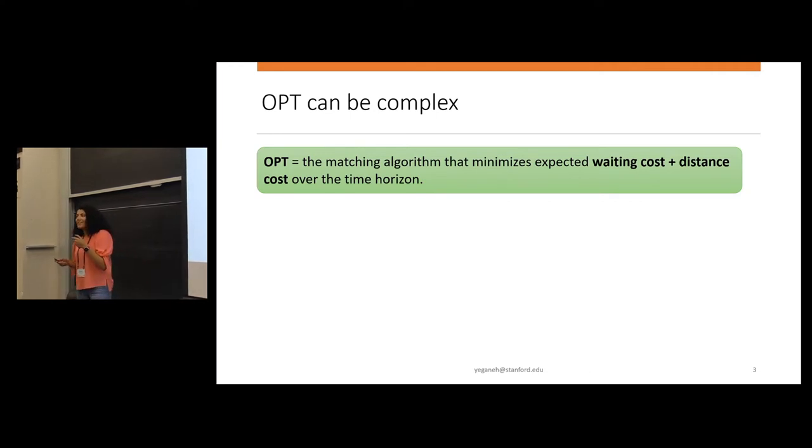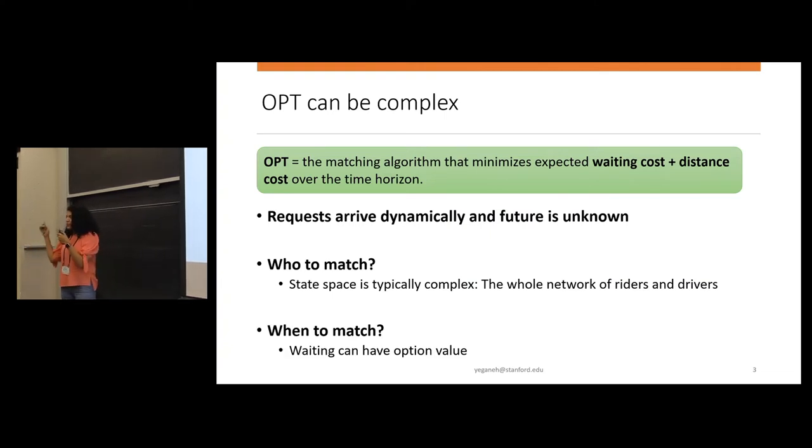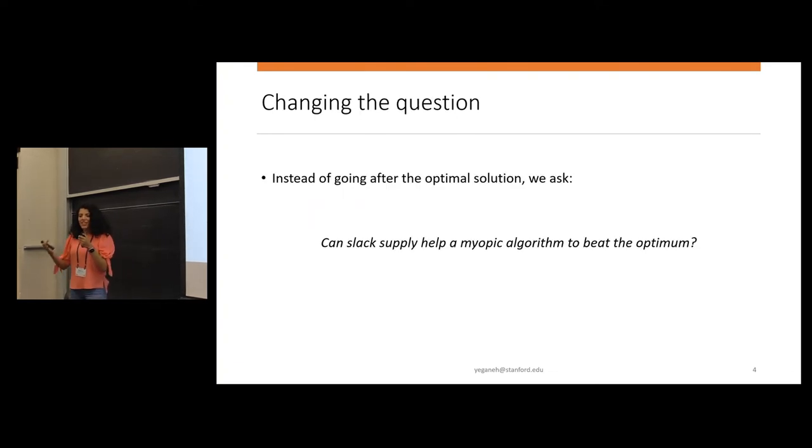So the optimal algorithm can be hard in general because the question of who to match and also when to match. Should I wait and batch a few riders, or should I just match immediately? But here, we are changing the question. Instead of analyzing the optimal algorithm, we are asking if we have the ability to have a slack supply to attract more drivers, can a myopic algorithm beat the optimal in the balanced market?